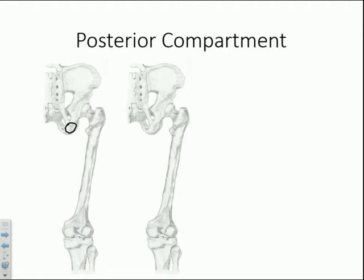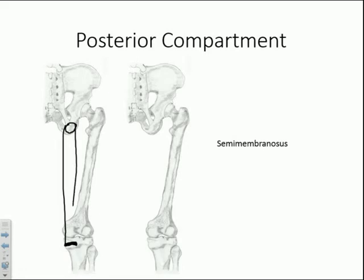All three hamstring muscles cross both the hip and knee joints. The first attaches on the medial aspect and is known as the semimembranosus. Its insertion point is along the posterior surface of the tibia, and its fibers also run partially into the posterior joint capsule of the knee. It tends to have a very thick tendinous attachment, hence the name semimembranosus.